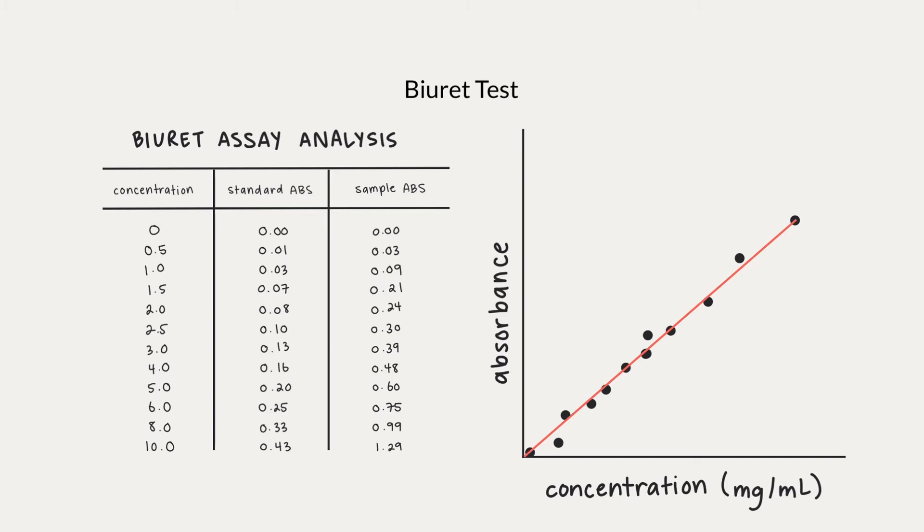The Biuret test can also be used to detect protein in urine, and too much protein in the urine can lead to kidney disease, diabetes, and high blood pressure.